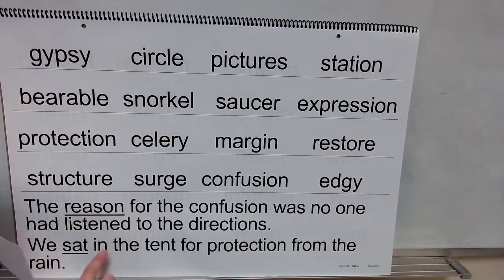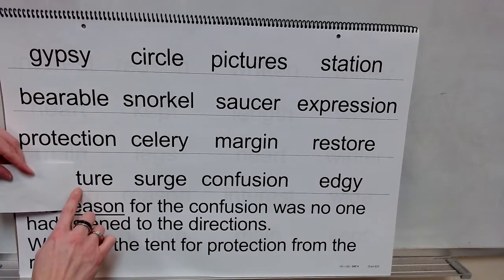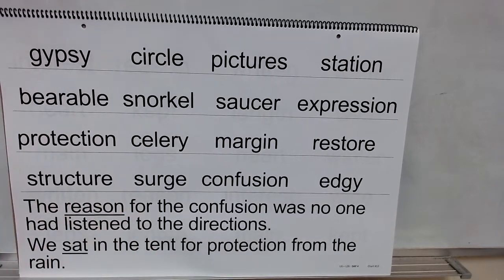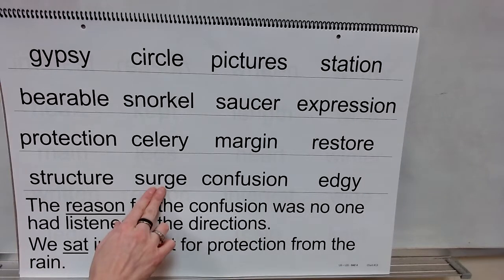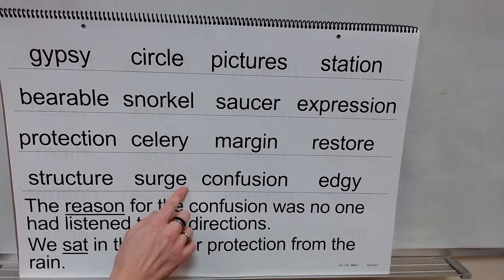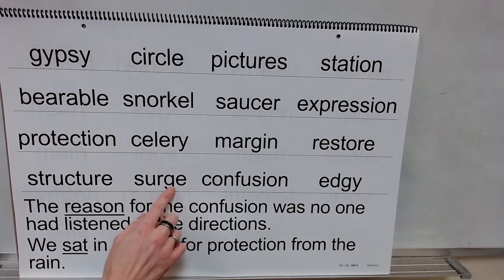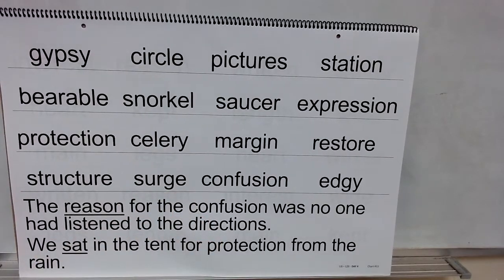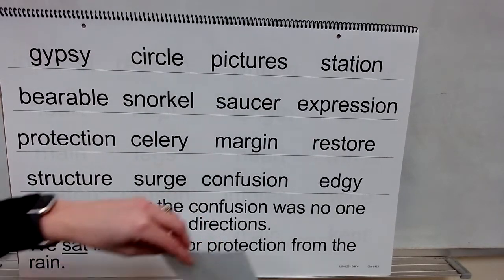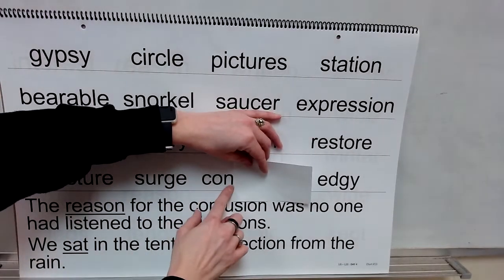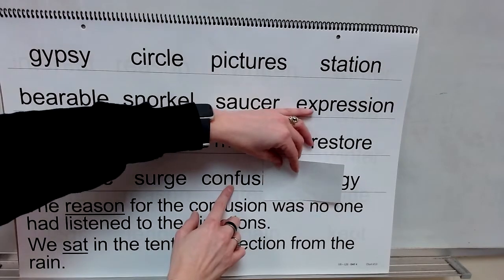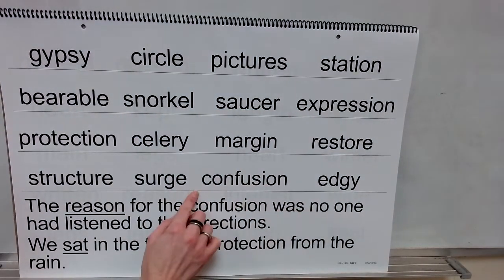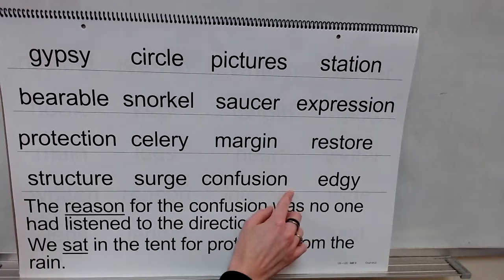Syllable: struck. Syllable: chur. Word: structure. Sound: er. Followed by the E — that sound is J. Word: surge. Syllable: con. Syllable: view. Syllable: shun. Word: confusion.